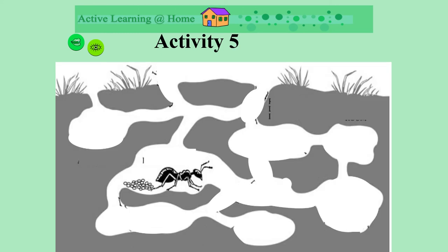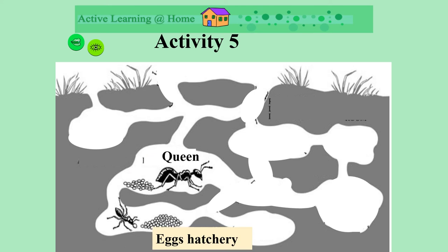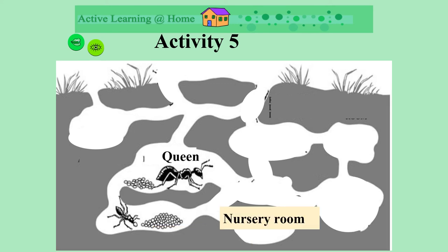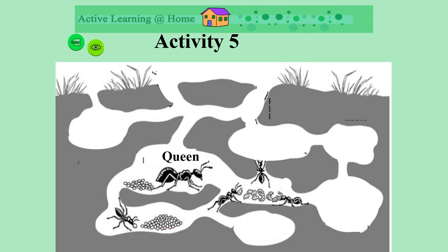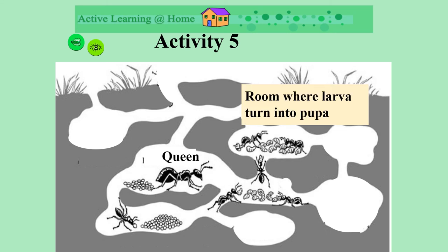Here is a queen. She is laying eggs. Then there is a hatchery where the eggs are moved, and the worker ants look after the eggs. The eggs then get moved to a nursery. In the nursery they are cared for again. Now the larvae turn into pupa, and again the worker ants look after them.